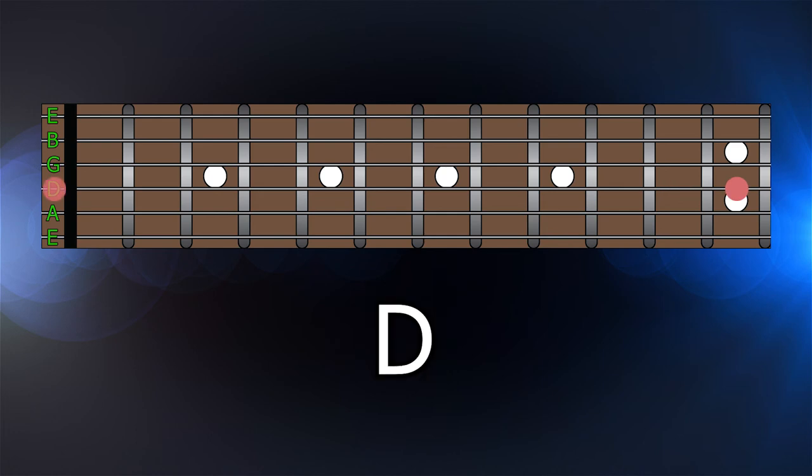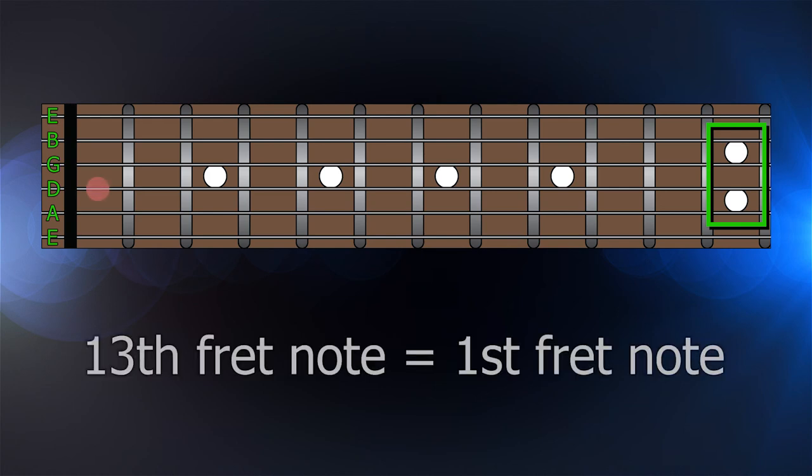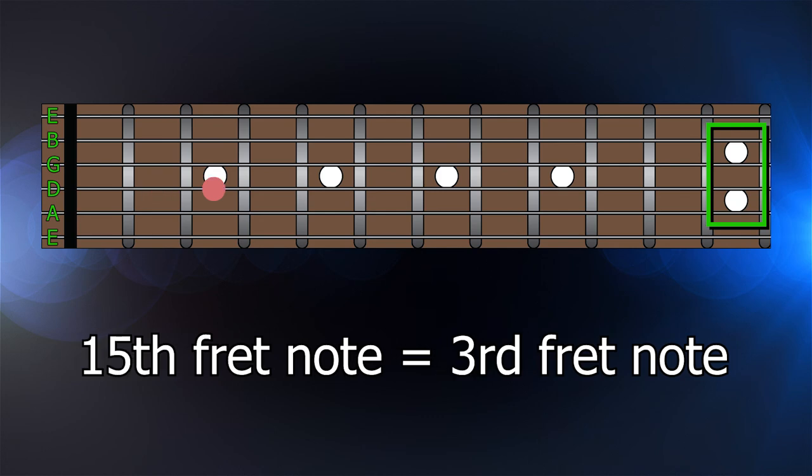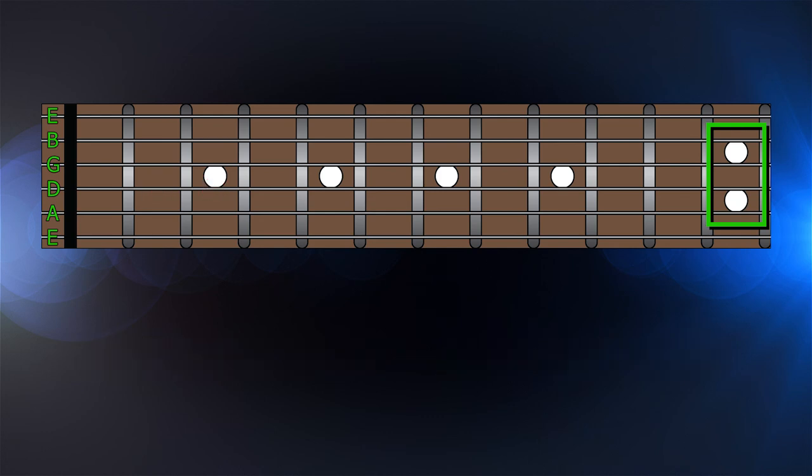Notice the twelfth fret and the open string are the same note, just one octave apart. Most guitars delineate the twelfth fret with two dots. The reason is because the octave cycle just repeats from there. As far as notes, the thirteenth fret is equivalent to the first, fourteenth to the second, fifteenth to the third, and so on, just an octave higher.